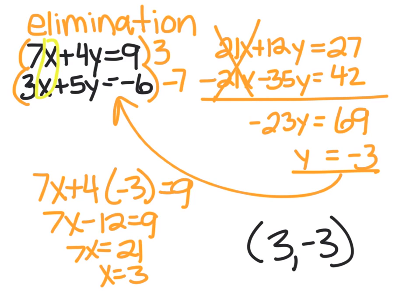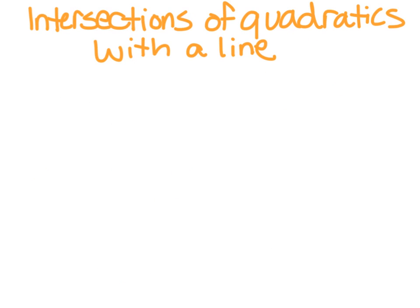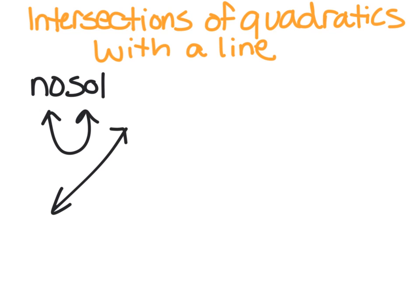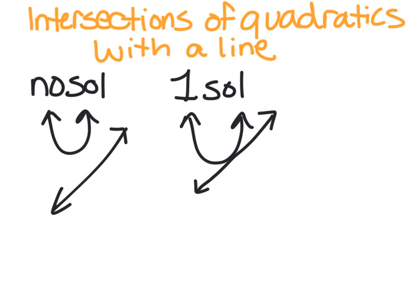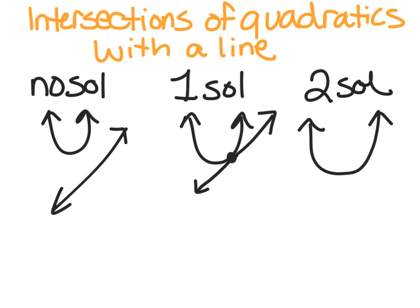So those are the three methods you should already know for linear systems, and we're going to use those same methods to cross lines with quadratics. Now when we intersect two lines, we have the option of one solution where they cross once, no solution where they're parallel, or infinitely many solutions where they're the same line. When we have quadratics, we could have no solution — our parabola up here and our line over here don't cross at all — just one solution where the line is tangent to the parabola and just touches once, or two solutions where our line crosses twice.